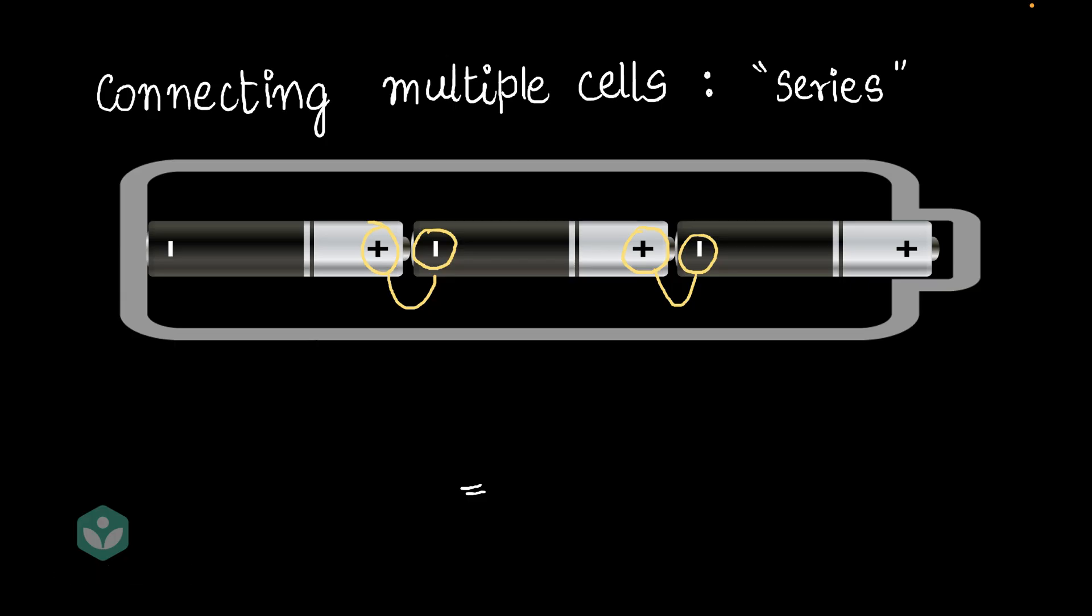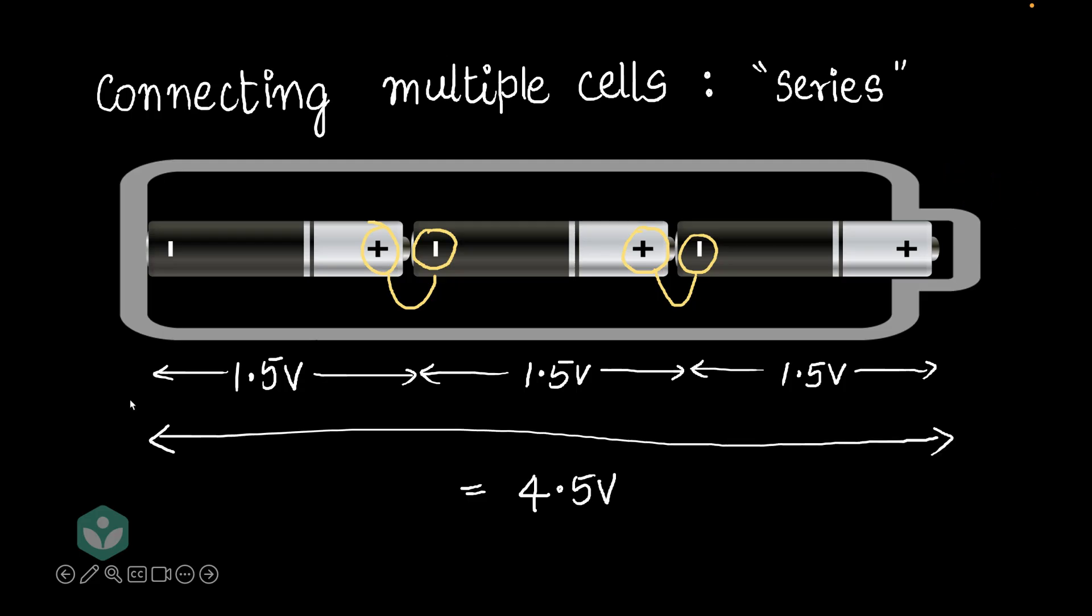And this kind of connection is called a series connection. Why would we want to do such a connection? Well, if the potential difference across each of these cells is 1.5 volts, then it's interesting to note that the potential difference across the entire battery of three cells would be 4.5 volts. Now, you may ask, wait a minute, where does this 4.5 number come from? It's very simple. Basically, the potential difference across this entire battery is the sum of the potential differences across the individual batteries. I'd encourage you to pause and think about it for a moment.